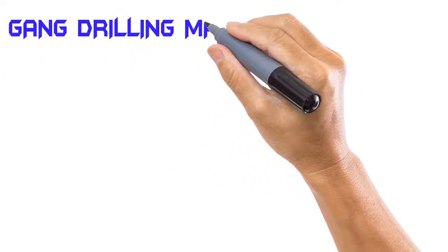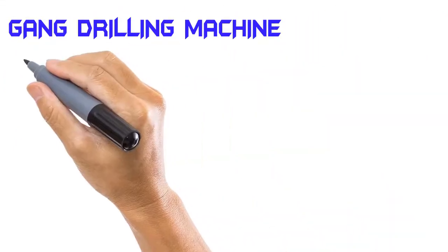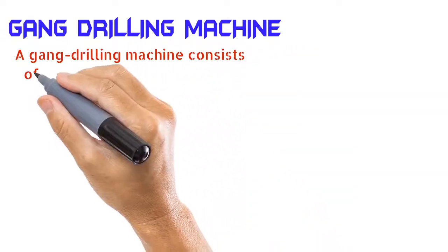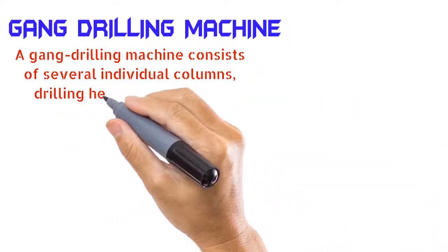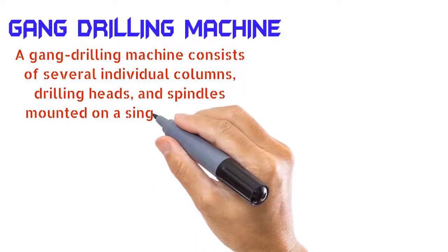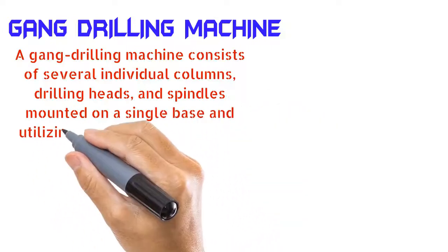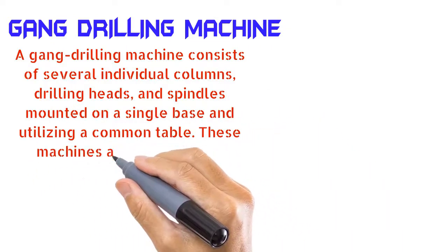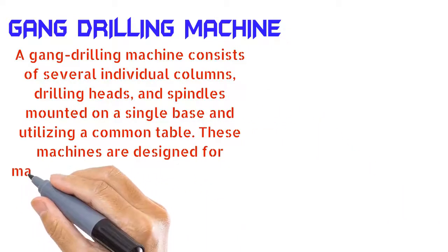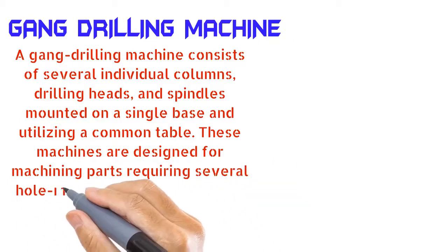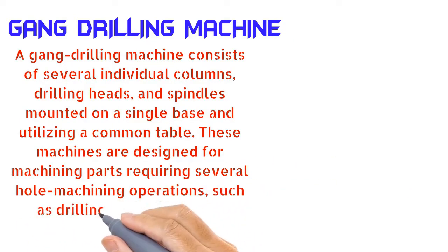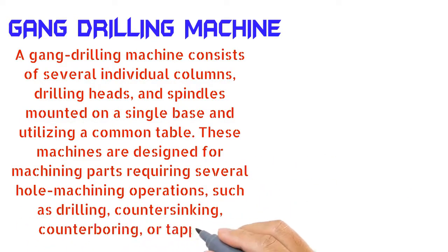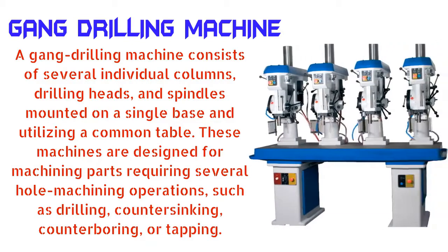Gang drilling machine: A gang drilling machine consists of several individual columns, drilling heads, and spindles mounted on a single base and utilizing a common table. These machines are designed for machining parts requiring several hole machining operations, such as drilling, countersinking, counter-boring, or tapping.